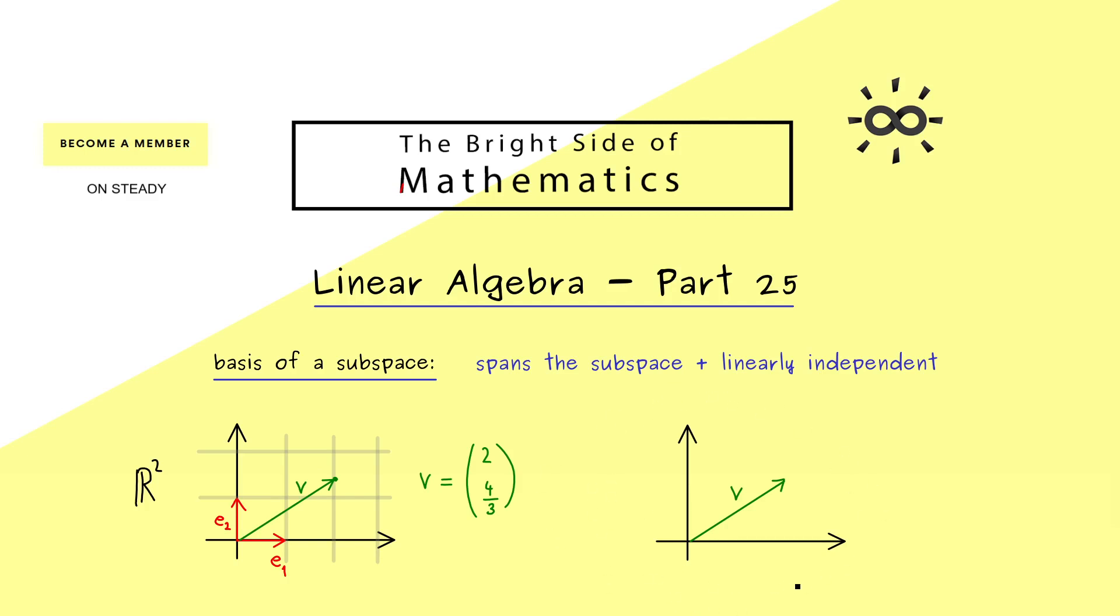So here is our vector space R² as the plane and now we choose two different vectors as a basis. So for example this one could be our first basis element and this one the second. Now there you should see obviously both points for basis are satisfied. However now this new basis here also defines a new grid in the plane. So you see it does not have to be right angled as before. This is no problem at all.